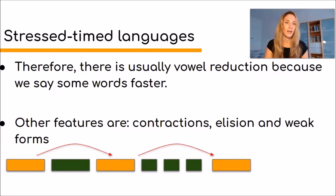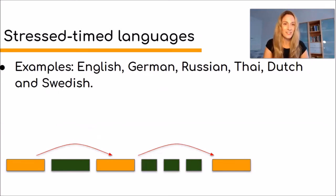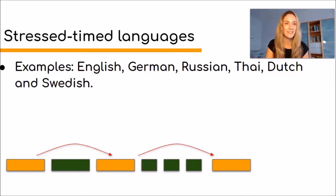Other features of stress-timed languages also include contractions, elision — meaning some sounds are lost — weak forms, and longer vowels becoming shorter. All of those things are features of stress-timed languages. If you want to know more about contractions, elision, and weak forms, check out my other videos on my channel. Examples of stress-timed languages include English, German, Russian, Thai, Dutch, and Swedish.